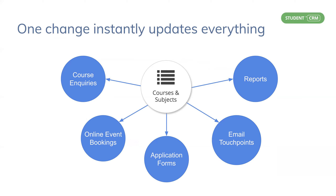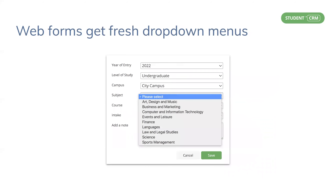Web forms get fresh drop-down menus. Students can select their course by selecting year of entry, level of study, and so on. And because your web forms are all driven by the course list in Student CRM, all the changes take immediate effect without you needing to ever update a form.